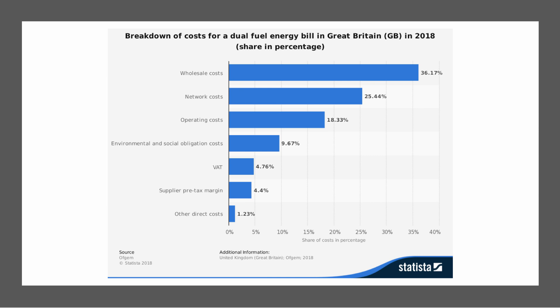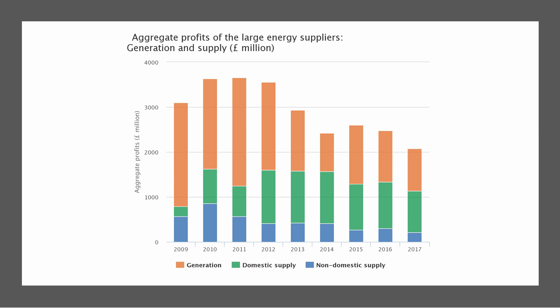If we think about the cost breakdown for an energy bill facing a typical household in Britain, this data is for 2018. It shows that costs for environmental and social obligations, which includes the minimum carbon price in the European Emissions Trading Scheme, make up about 10% of the total fuel bill. Wholesale costs — the cost of buying energy from the wholesale market — make up the biggest share at just over 36%. This chart shows the aggregate profits of the big six energy suppliers in the UK, which fell from about £3.5 billion in 2010–2011 down to about £2 billion.